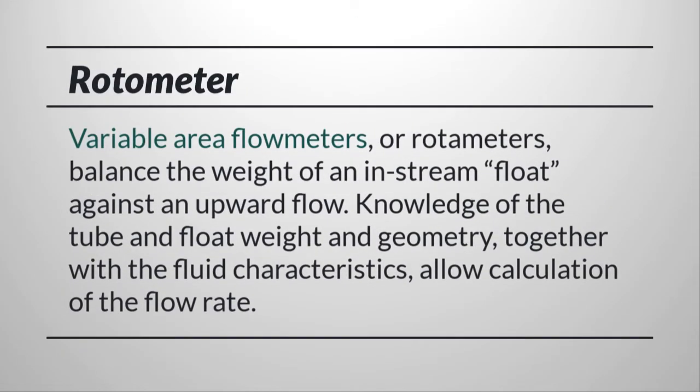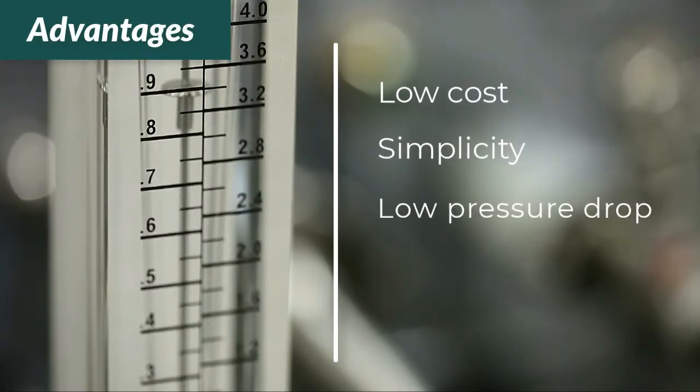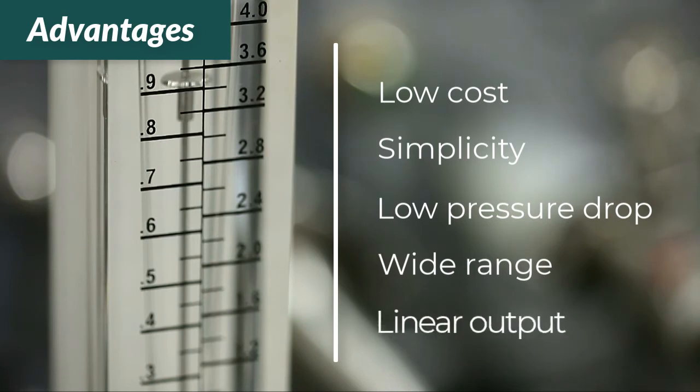In a rotameter or variable area meter, the force of the flowing fluid moves a weighted float upward in a tapered vertical tube. The higher the flow rate, the higher the float's equilibrium point. Advantages include low cost, simplicity, low pressure drop, wide range, and linear output.